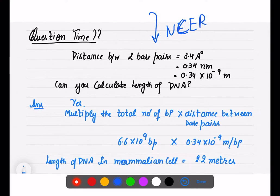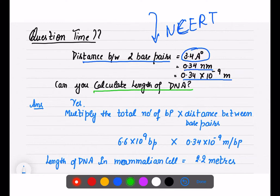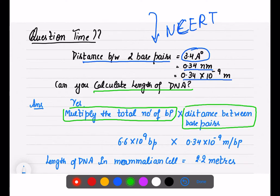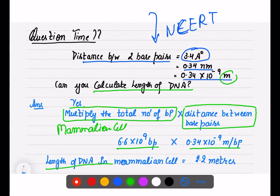From NCERT: the distance between two base pairs is 3.4 angstroms, which is 0.34 nanometers, or 0.34 × 10⁻⁹ meters. To calculate the length of DNA, multiply the total number of base pairs by the distance between two base pairs. For a human cell: 6.6 × 10⁹ base pairs × 0.34 × 10⁻⁹ meters per base pair = approximately 2.2 meters of DNA.